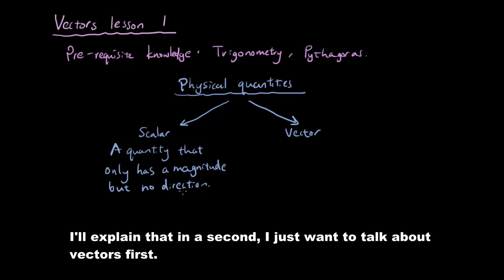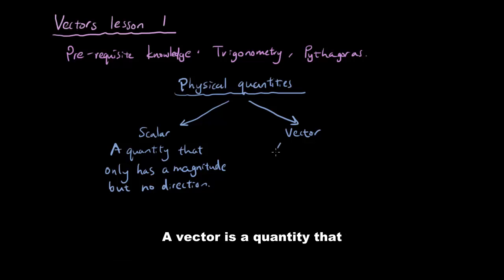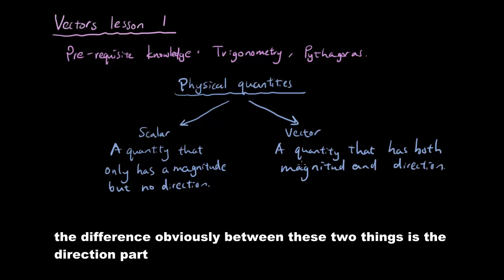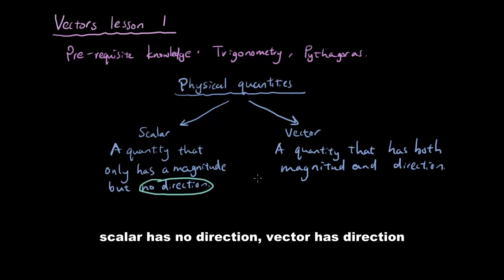So I'll explain that in a second. I just want to talk about vectors first. So a vector is a quantity that has both magnitude and direction. And the difference obviously between these two things is the direction part. Scalar has no direction, vector has direction.